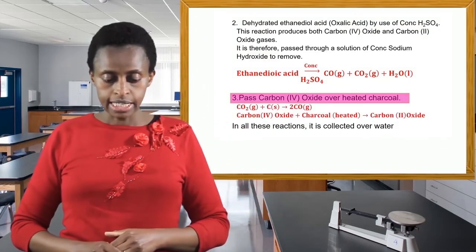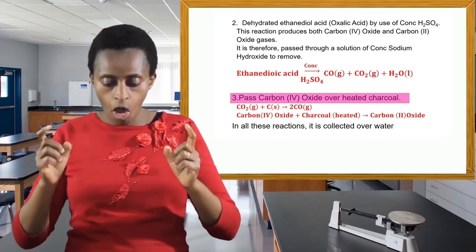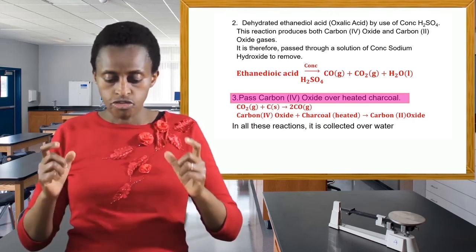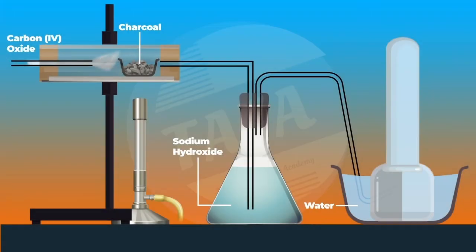The third method of preparing carbon monoxide is passing carbon dioxide over heated charcoal. Carbon dioxide plus charcoal—remember charcoal is carbon—produces carbon monoxide. The reaction is done at elevated temperatures, and you have carbon monoxide as the product. Those are the three methods that we use to collect the gas.